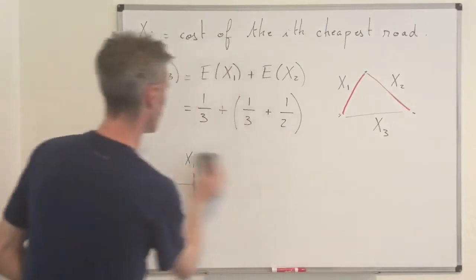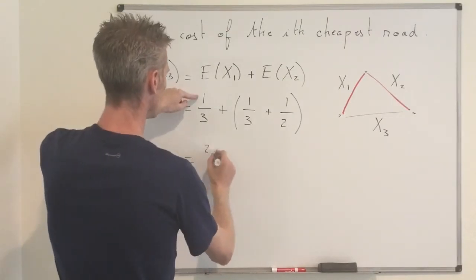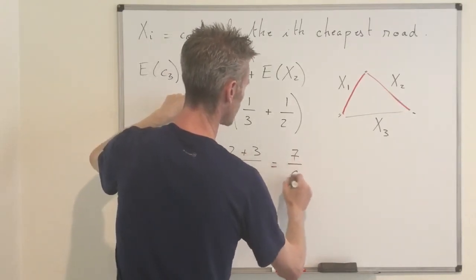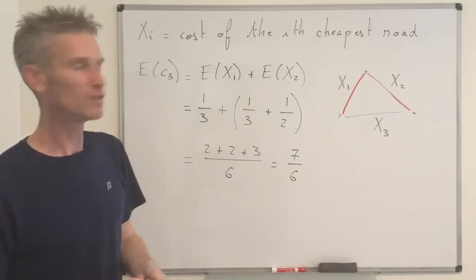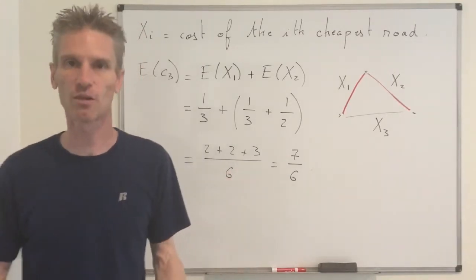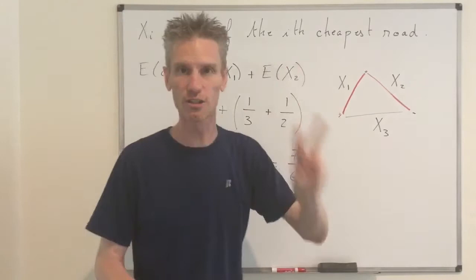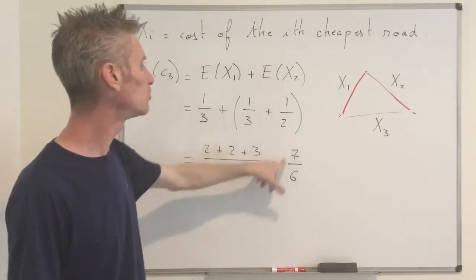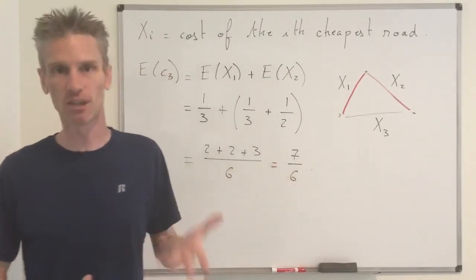So the expected value of X2 is 1/3 + 1/2. Combining over a common denominator of 6, we get 2/6 + 3/6 = 5/6... and the total expected value of C2 equals 1/3 + 1/3 + 1/2, which simplifies to 7/6. So if you build the two cheapest roads optimally, the average cost is 7/6, compared to a cost of 2 if you built two roads at random — saving a significant amount.